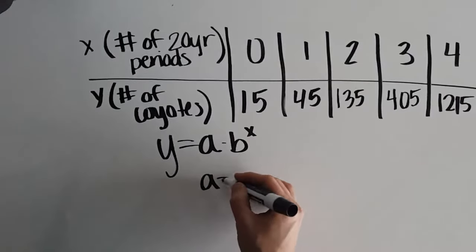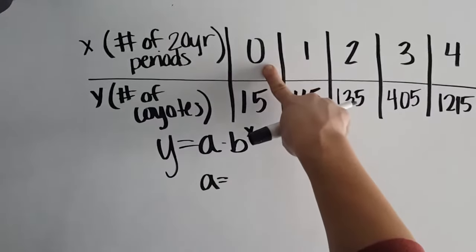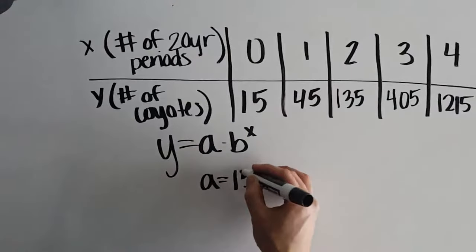a is our starting amount. We can see that in year 0, there were 15 coyotes to begin with. So a is going to be 15.